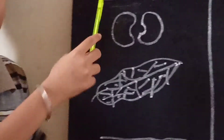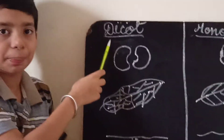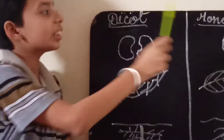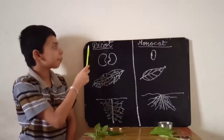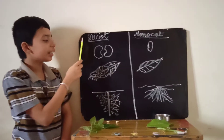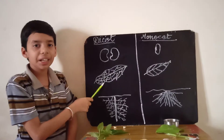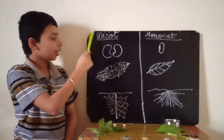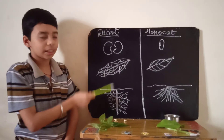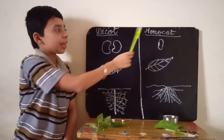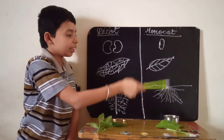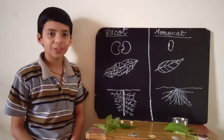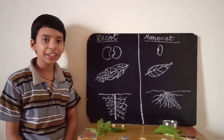Today I explained about dicotyledon seeds and monocotyledon seeds, dicotyledon plants' leaves and monocotyledon plants' leaves, and dicotyledon plant roots and monocotyledon plant roots. That's all for today's session. Thank you.